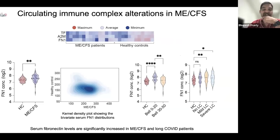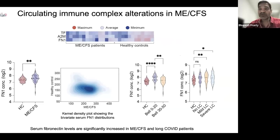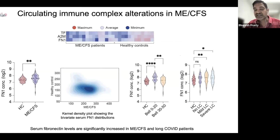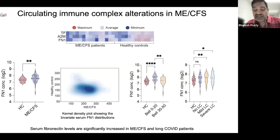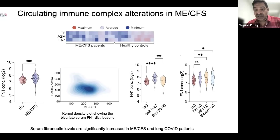One key feature that we found is called fibronectin. This molecule is very popular in the field of coagulation. We found that there are two aspects of fibronectin: one is its role in complement activation, and it prevents bacterial as well as viral infections. We found that both in long COVID patients and the ME/CFS patients there is an increasing circulating fibronectin, and this has a correlation with disease severity.